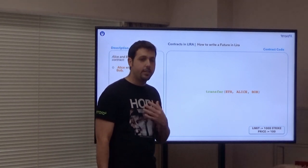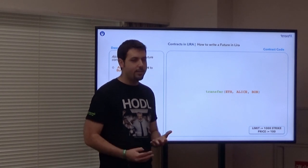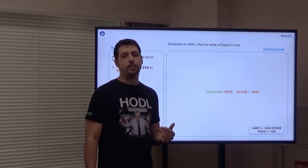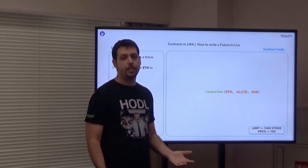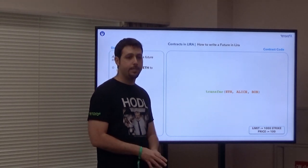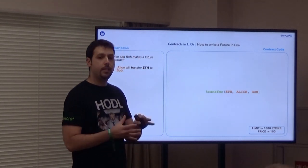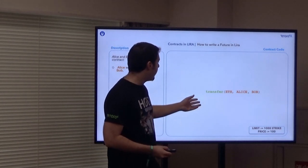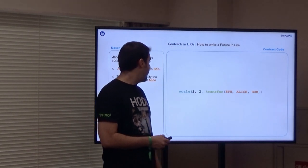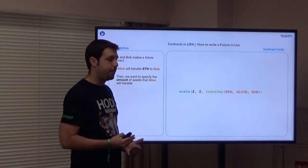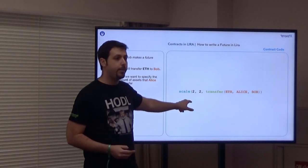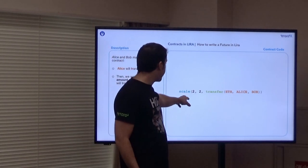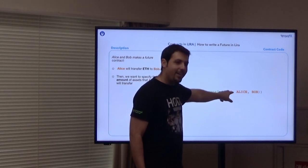The insight in the language is that most financial contracts finish with a transfer or an empty transfer — which is 'zero' in our contract language, meaning do nothing. The leaf operations in the functional language are always a transfer or a zero operation. In this case, it's a transfer of ETH from Alice to Bob. The next stage is 'scale', which takes two parameters — how much you multiply the leaf operations, and how much you want the custodian to hold.